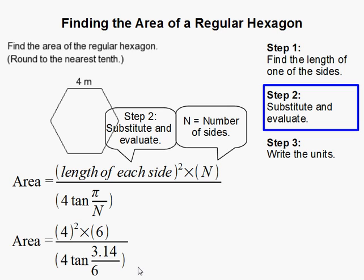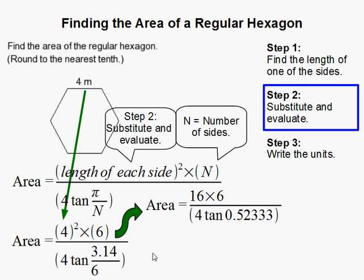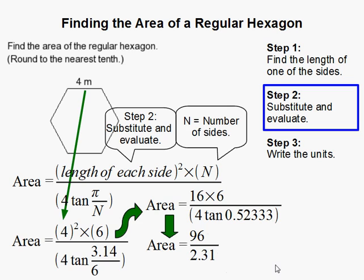Make sure you know how to do that, or ask your teacher, if you're going to use this method. After substituting, the numerator becomes 16 times 6, and the denominator is 4 times the tangent of that decimal value. This gives us 96 over 2.31, which equals 41.56.